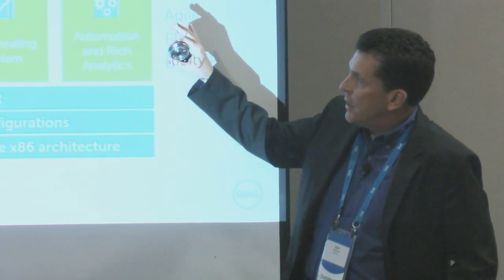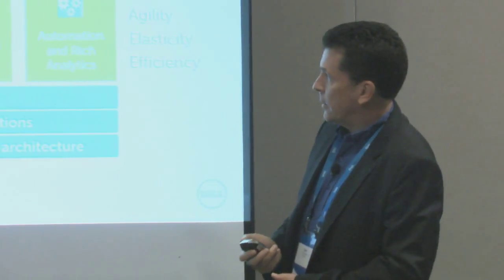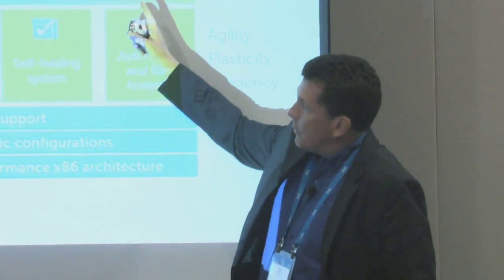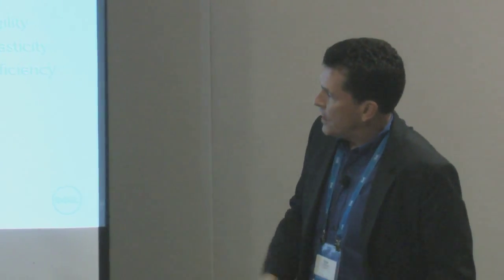The higher-end one, running on the Nutanix software — the XC Web Scale Converged Appliance for VDI — is the same approach but more of a building block to scale out. You still get the same benefits: great performance, very specific config so you know exactly what your people should expect and what you're going to spend. It has more redundancy built in. You start with three 2U nodes for redundancy and reliability, then add nodes incrementally. You can still get it up in an afternoon and get a robust, highly scalable VDI system.